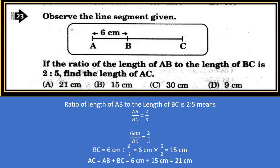If the ratio of the length of AB to the length of BC is 2:5, find the length of AC. AB/BC = 2/5. Since AB = 6 cm, we get 6/BC = 2/5, so BC = 6 × 5/2 = 15 cm. AC = AB + BC = 6 + 15 = 21 cm.